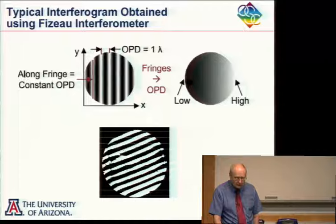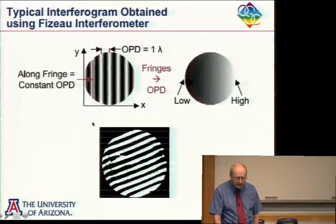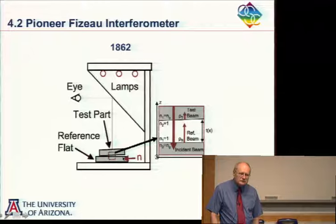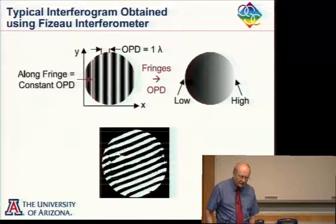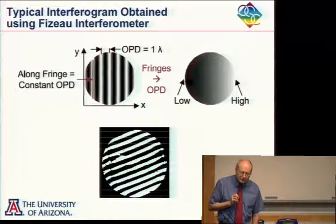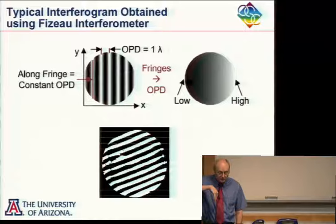Along a fringe, the OPD is constant. Going from one fringe to the next, the OPD changes by one wavelength. If the OPD changes by one wavelength, how much does the thickness between the plates change? Half a wave — the light goes through twice. So the height separation between the two surfaces changes by lambda over two at normal incidence. A nice thing about using a beam splitter here is that we look in pretty much at normal incidence.